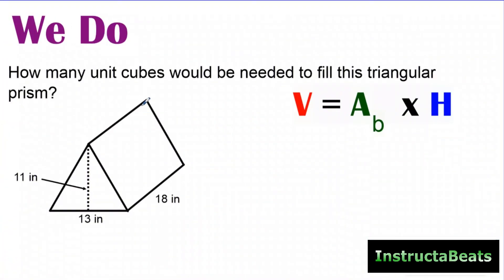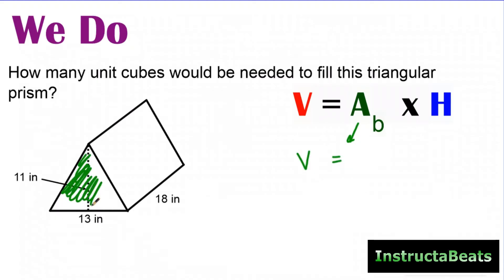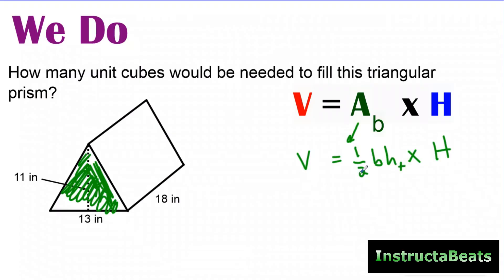We want to know how many unit cubes would be needed to fill this triangular prism. We're going to use the same formula: volume equals area of the base times height for any right prism. But the area of the base is going to change — if it was a right rectangular prism, we'd be doing length times width. The area formula for a triangle is one half base times height. If you flip the prism up, the triangles would be the top and the bottom. So the formula for a triangle, as you know from our previous lesson, is one half base times height. Then we're going to multiply that by the height of the prism.